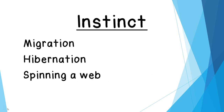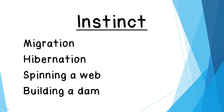Another instinct is spinning a web. Nobody has to teach a spider how to do it. In Charlotte's Web, a great story about a pig named Wilbur and his friend Charlotte the spider, she makes words in her web — but nobody taught her how. She just knew. And another instinct is building a dam. Beavers don't have to take classes or watch other animals — they instinctively know how to build a dam.